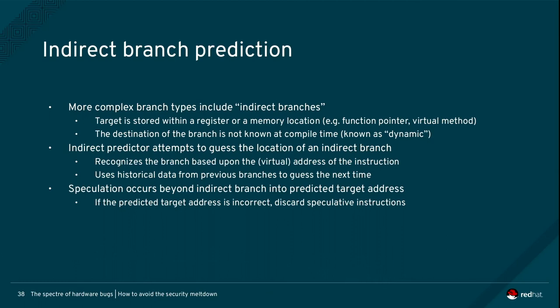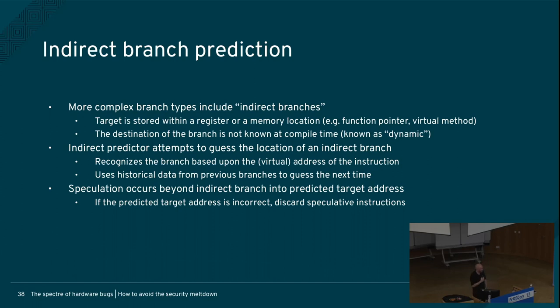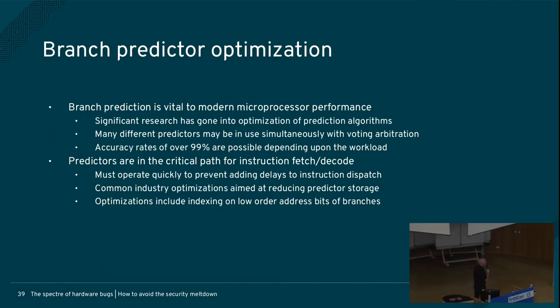Over time we train branch predictors — that's the design feature: train them to guess the future based on the past. There are many different kinds of predictors, some documented, some not. We can also do indirect branch prediction. An indirect branch is not a simple if-this-or-that; it's like a virtual method, function pointer, or complex indirect call that the programmer has control over. We've built fancy hardware that can guess how indirect branches are going to behave as well.